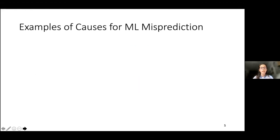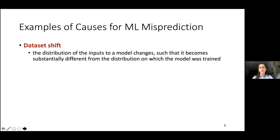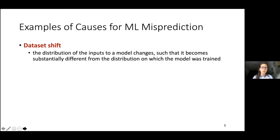What exactly can cause these systems to misbehave? We think about different kinds of causes of misprediction, and one of them is dataset shift. Dataset shift is basically a change in the distribution of the input samples, meaning the samples that arrive to the machine learning model are substantially different from the samples on which the model was trained. Because of this, the machine learning model doesn't know how to predict them. This can happen in the fraud domain when new fraud patterns emerge, causing fraudulent transactions to have features the model cannot distinguish from legitimate ones.